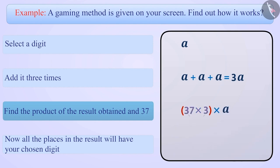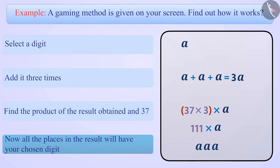37 into 3 is equal to 111. In this way, if we multiply a with 111, we get the number which has the same digit in all places.